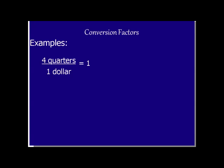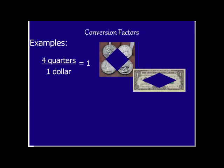For example, if we are talking in terms of money, we know that four quarters is the same thing as saying that I have one dollar. So we can set up a conversion factor that has four quarters in the numerator and one dollar in the denominator. And we can even flip this conversion factor where we can have one dollar in the numerator and four quarters in the denominator.